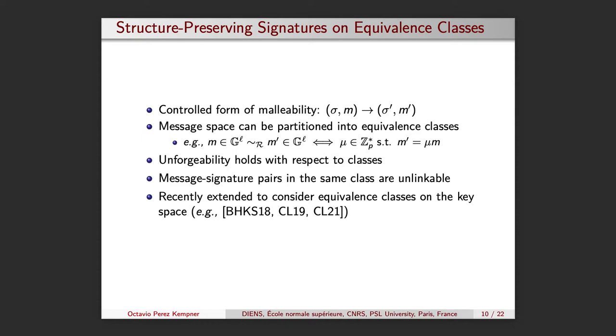Another important aspect is that the notion of equivalent classes has been recently extended to consider equivalent classes on the key space as well. When the signature acts on both the message and key spaces, it is said to be a mercurial signature. We will be using this later when discussing the notion of signer-hiding, but now let's move on to the ABC framework used in this work.